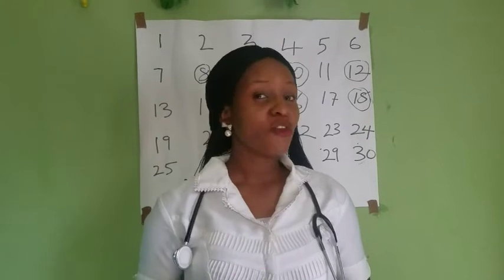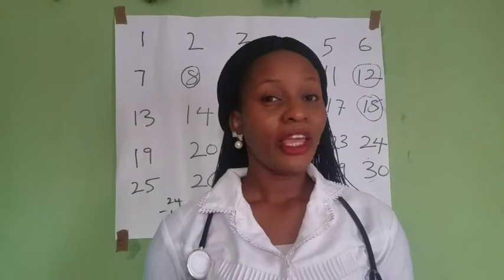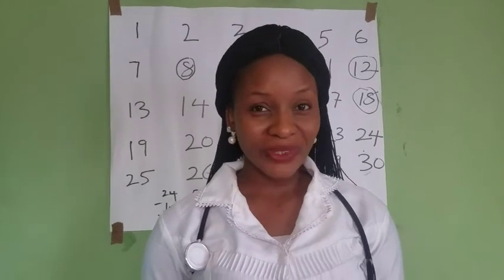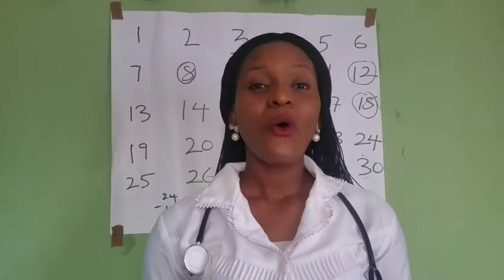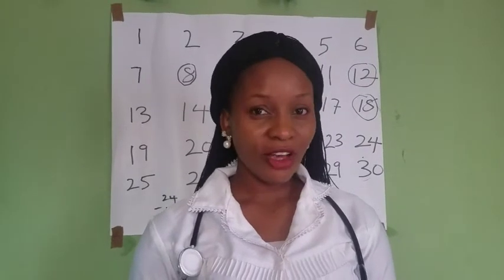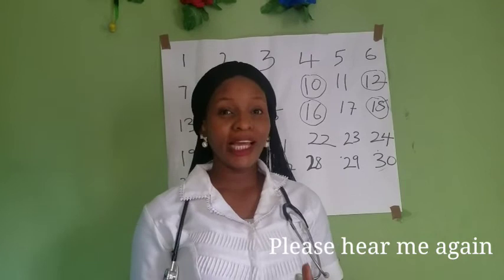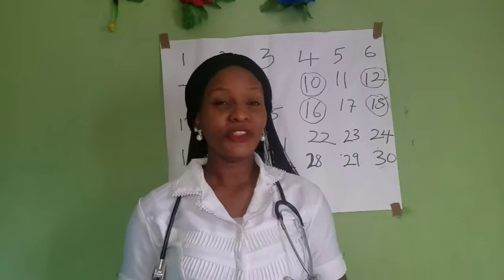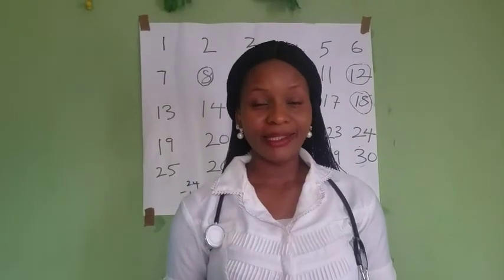If the egg is not fertilized, it is expelled from the uterus accompanied by the menstrual period. So if you're trying to get pregnant, you need to have unprotected intercourse before you ovulate or within 24 hours after ovulation — a few days before ovulation or on the ovulation day, but not after.